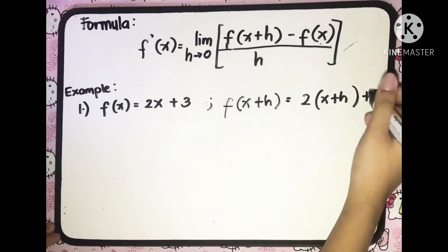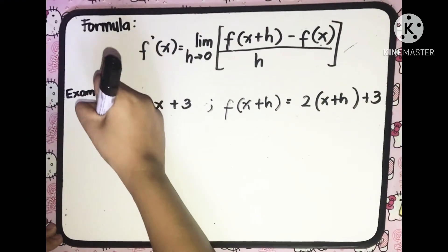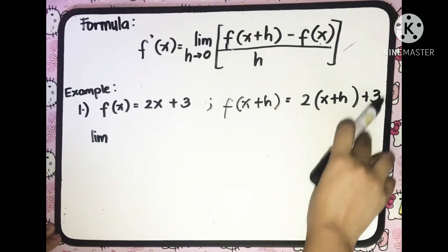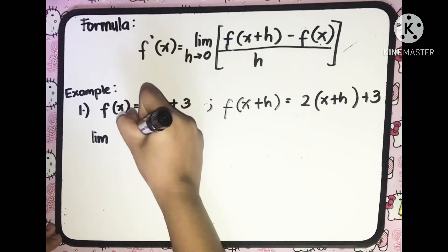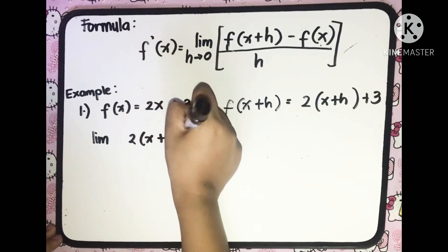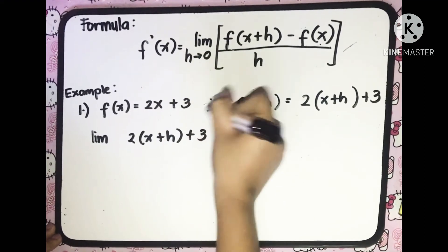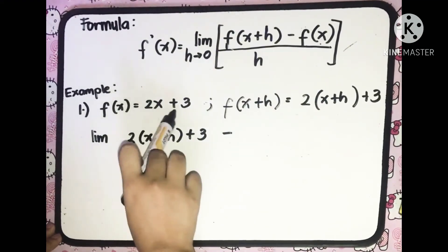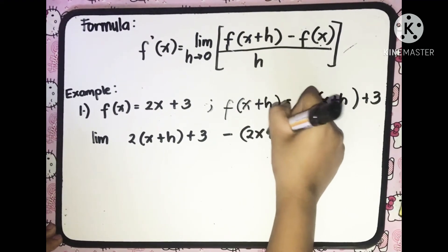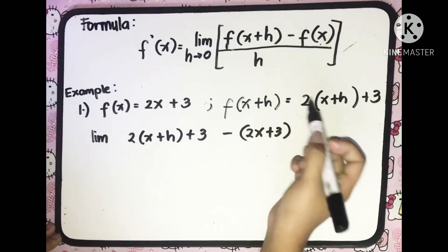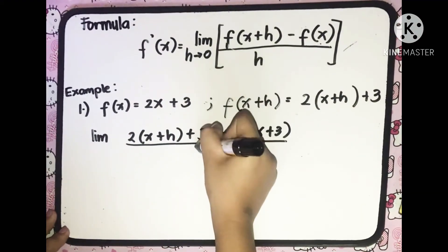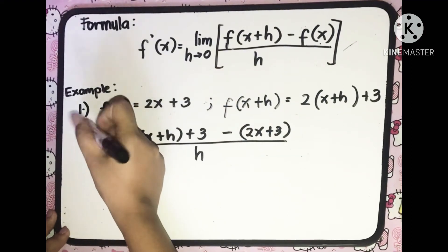We will have the limit of f of x plus h, which equals 2 multiplied by x plus h plus 3, minus the value of f of x which is equal to 2x plus 3. Don't forget the parenthesis, and then all over h as h approaches 0.